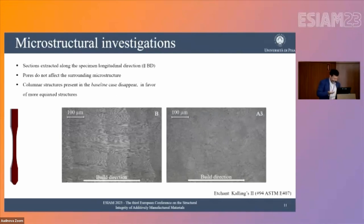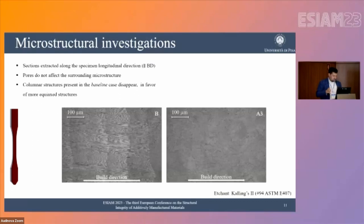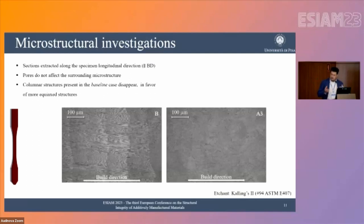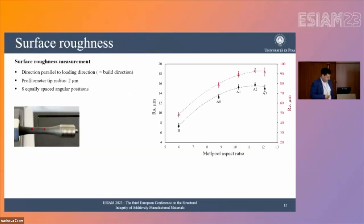Looking in more detail at the microstructure, the sporadic pores do not strongly affect the overall material, though the nearby area is slightly affected due to changes in heat distribution during solidification. The principal microstructural difference from baseline to high aspect ratio parameters is the transition from a columnar structure — where columnar grains overcome melt pool boundaries and align along the build direction — to a more equiaxed structure in the A3 condition, caused by a more randomized solidification at higher process speeds, producing smaller grains.